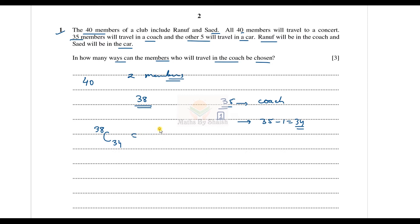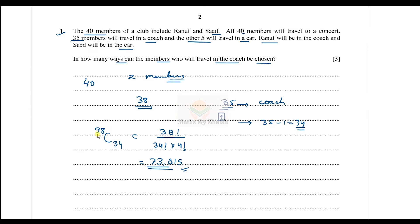This gives us 38! over (34! × 4!), which we can calculate, and this equals 73,815 ways. So there are 73,815 ways in which 34 members can be chosen from the remaining 38 to travel in the coach. I hope that is clear.